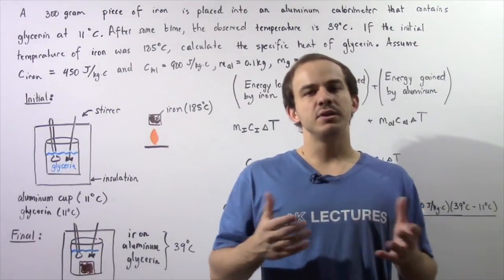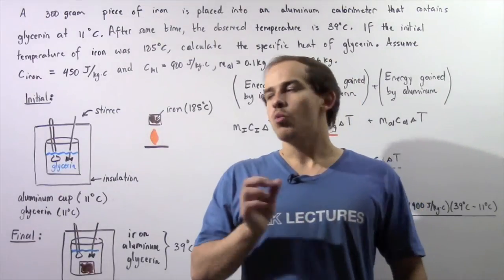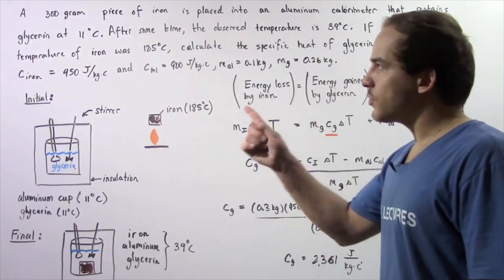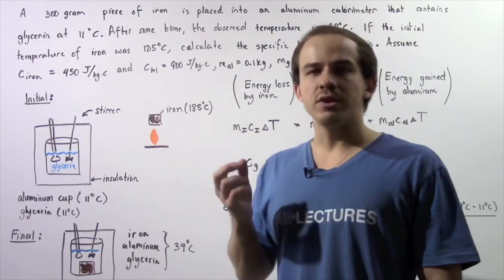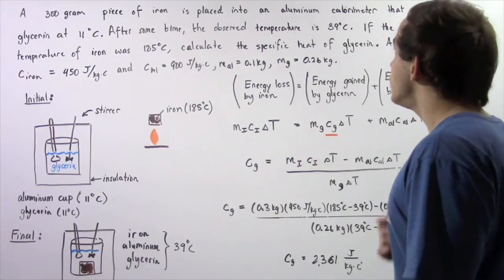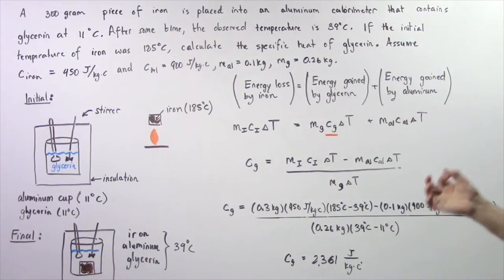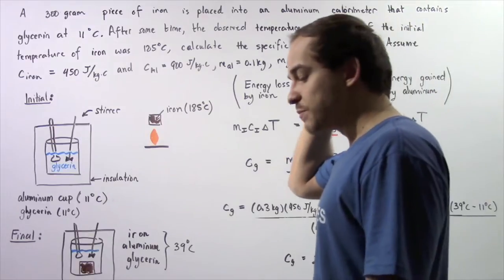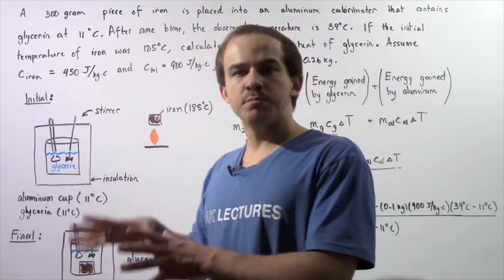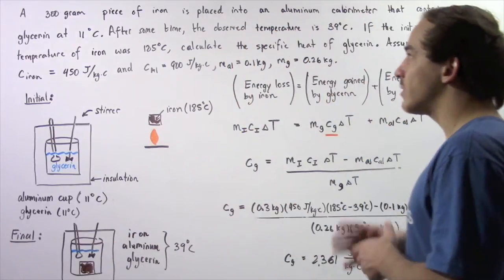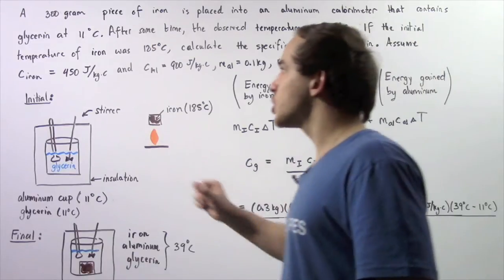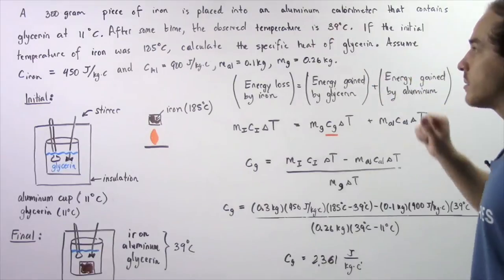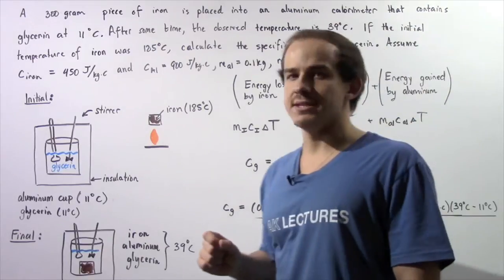Let's look at the following example in which we're going to deal with calorimetry. Suppose a 300 gram piece of iron is placed into an aluminum calorimeter that contains glycerin at 11 degrees Celsius. So initially, before we place the iron into our calorimeter, the temperature of the glycerin and the temperature of the aluminum cup is 11 degrees Celsius.